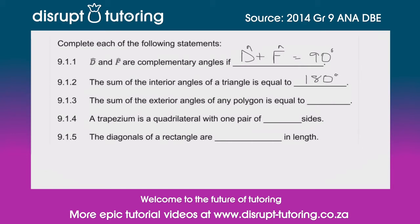Then they've said to us: the sum of the exterior angles of any polygon is always equal to. The sum of all the exterior angles of a polygon is always equal to 360 degrees.